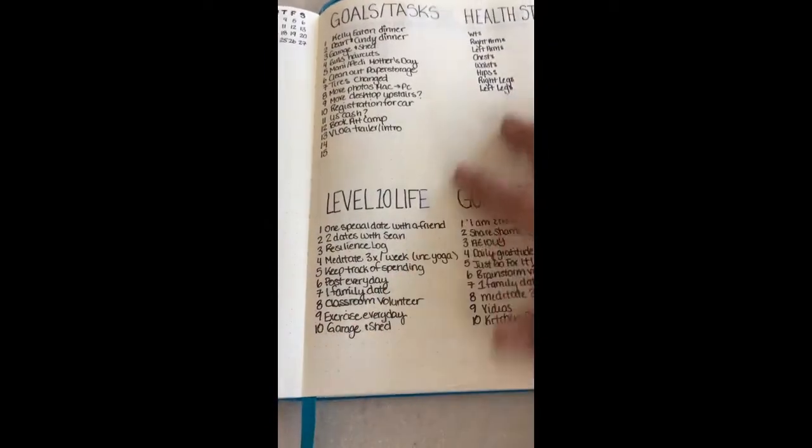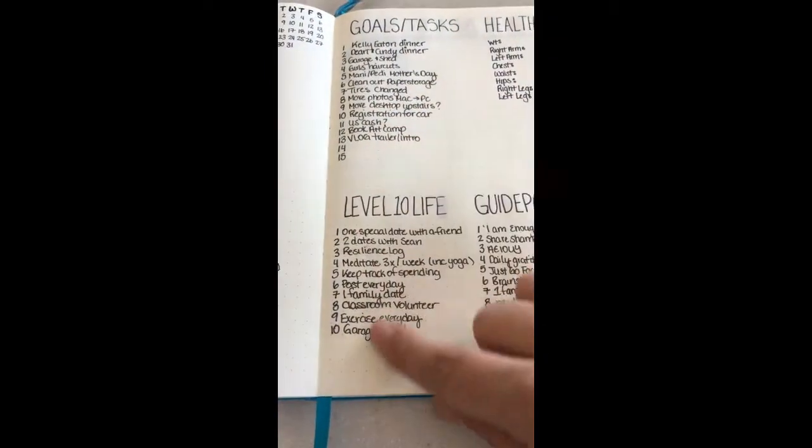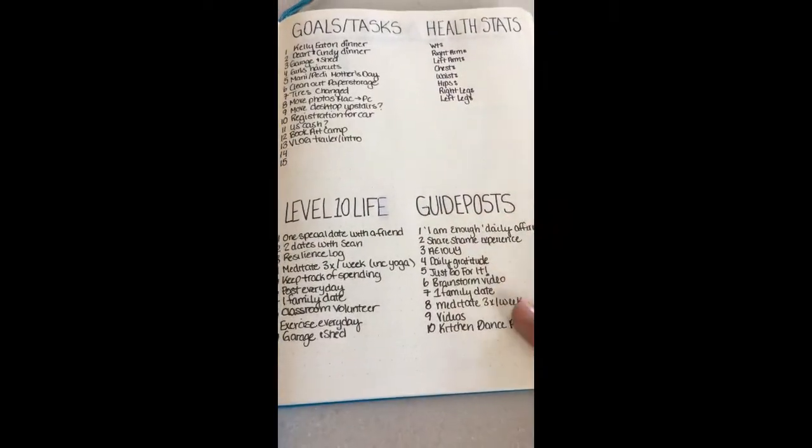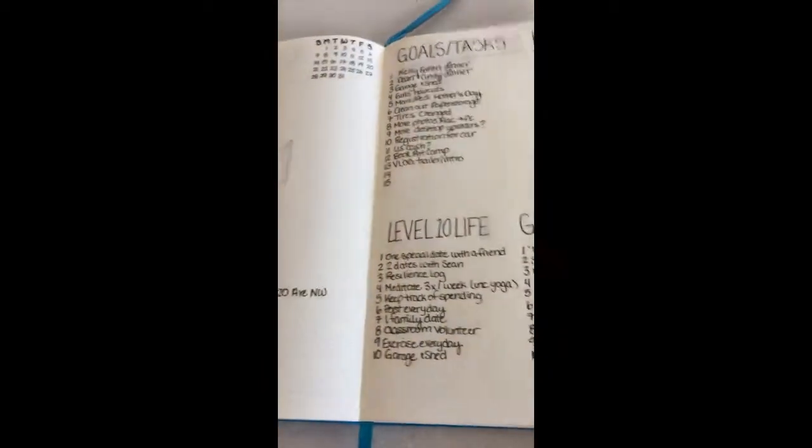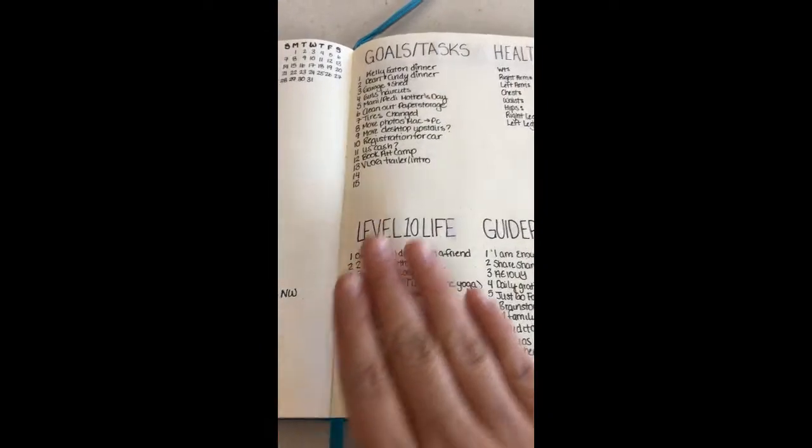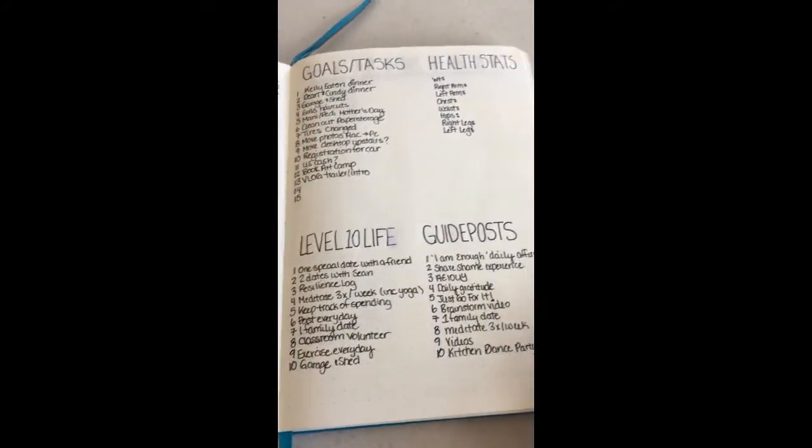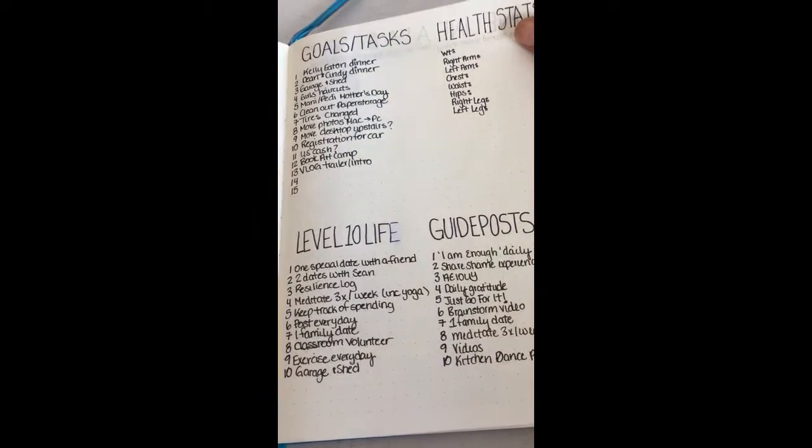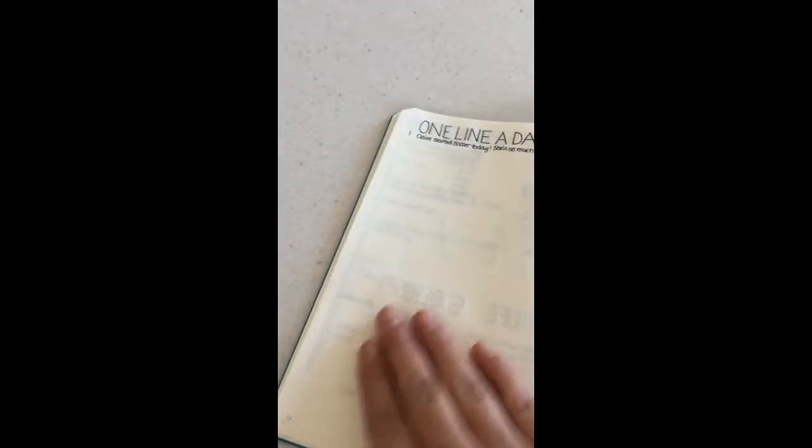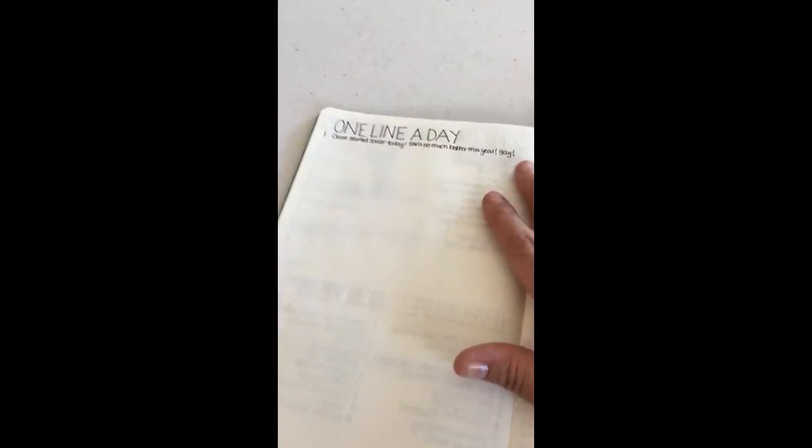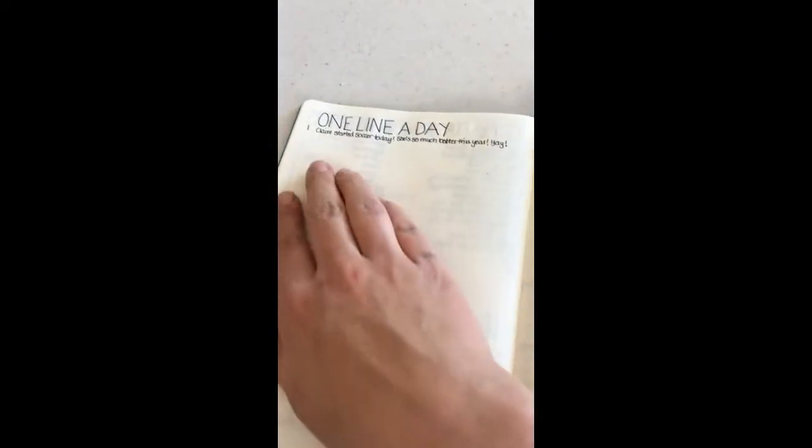And then, once you have those goals, you then can use those to then plan your weekly and daily trackers and goals. So also within the month of May, I have my one line a day, which is where I sort of do my journaling part. This is where I write something that happened. So we're May 2nd, I haven't written anything down today yet. I write something that happened today. So yesterday my daughter started her soccer season and she was amazing at it. And it was very sweet to watch her.